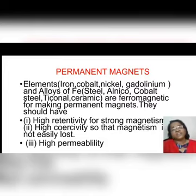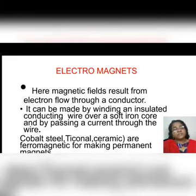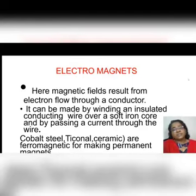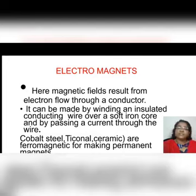If a material is demagnetized by small magnetic fields, we cannot choose it for making permanent magnets — it should definitely have high permeability. For electromagnets, when the current is switched off it loses its magnetism, so we can use it at our convenience. Its strength depends upon the current, the number of turns of the coil, and the core used — so we can alter the strength of the magnetic field produced.